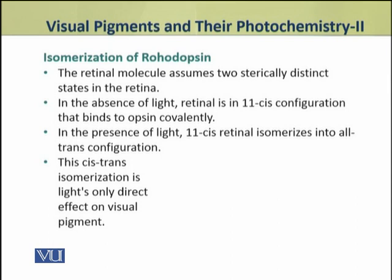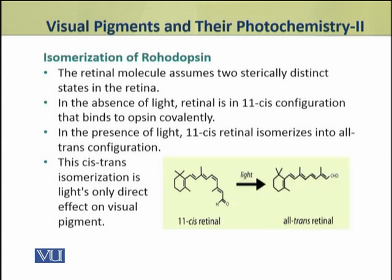In the absence of light, retinal is in the 11-cis configuration, which binds to the opsin covalently. In the presence of light, this 11-cis retinal isomerizes into the all-trans configuration. This cis-trans isomerization is light's only effect on visual pigments.